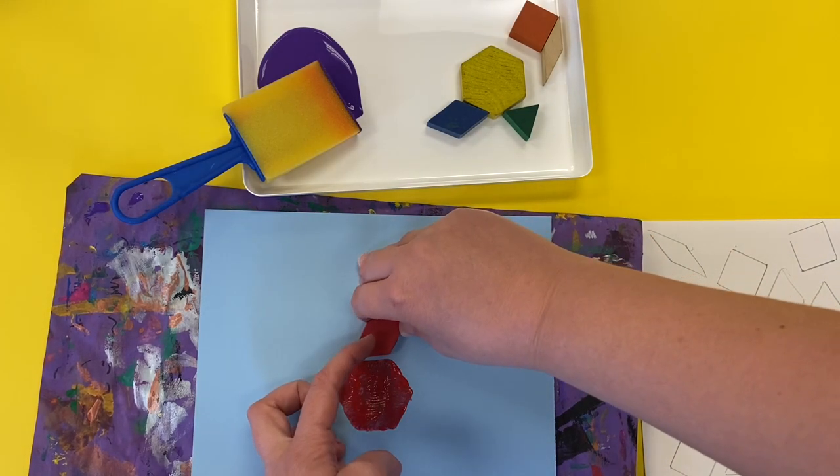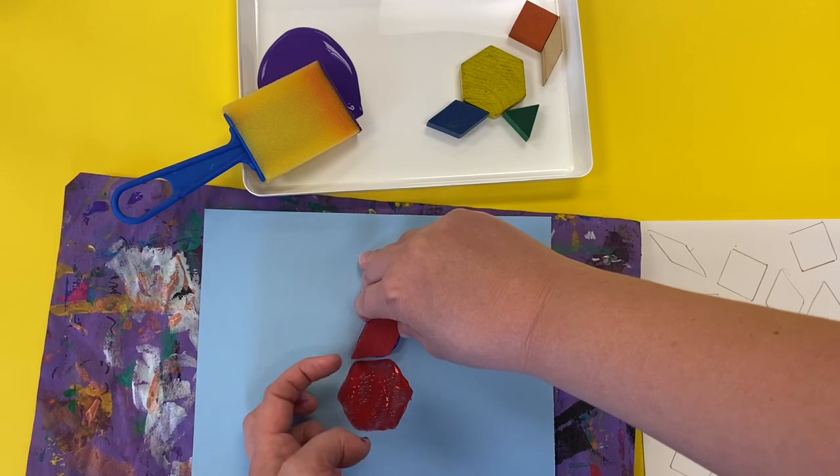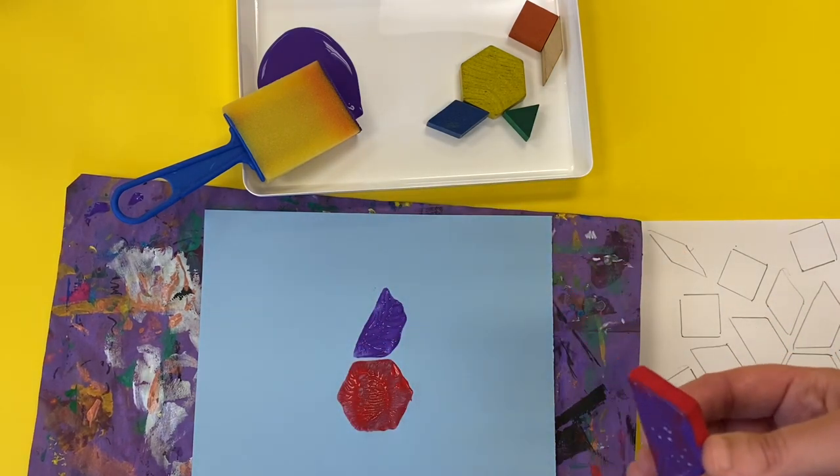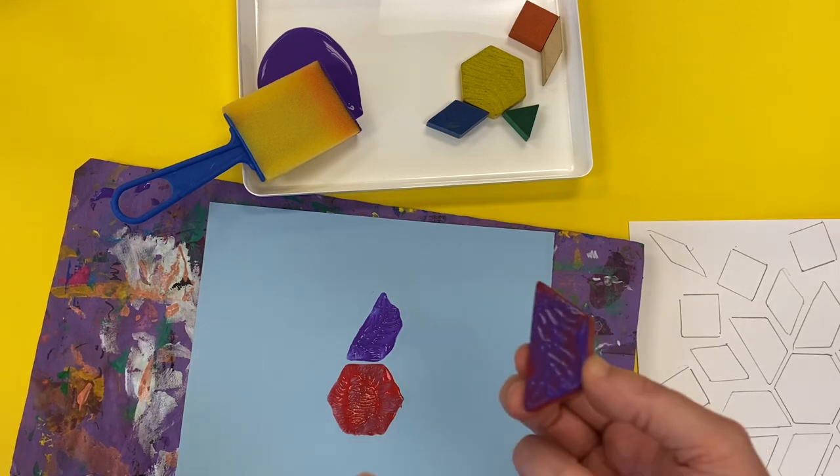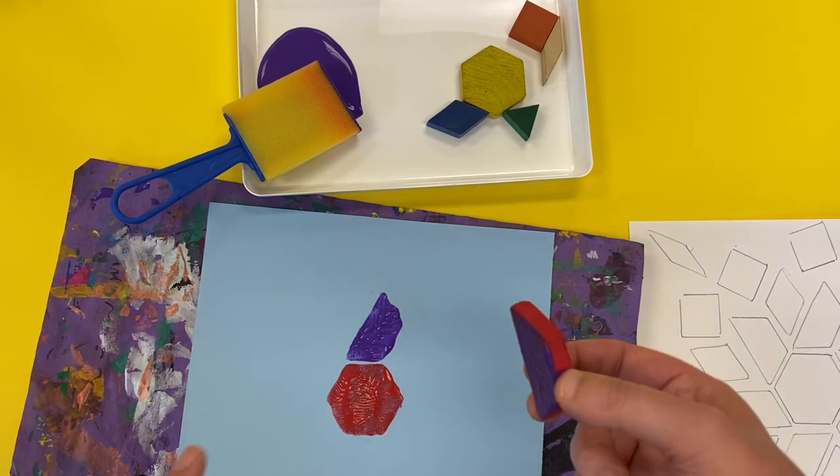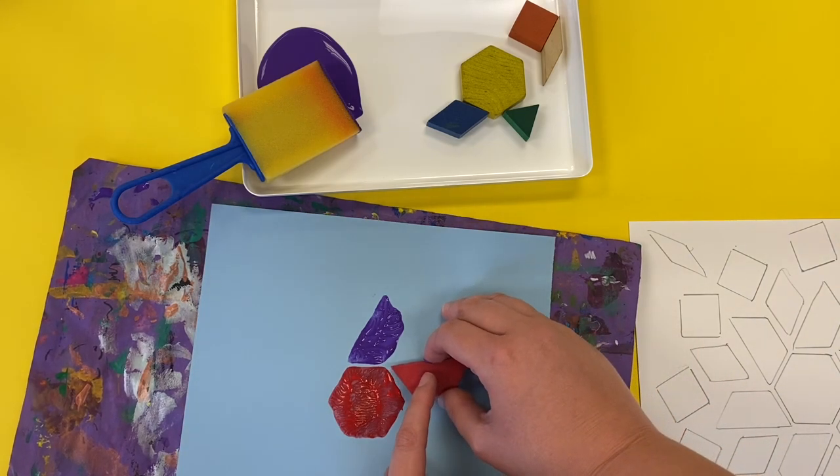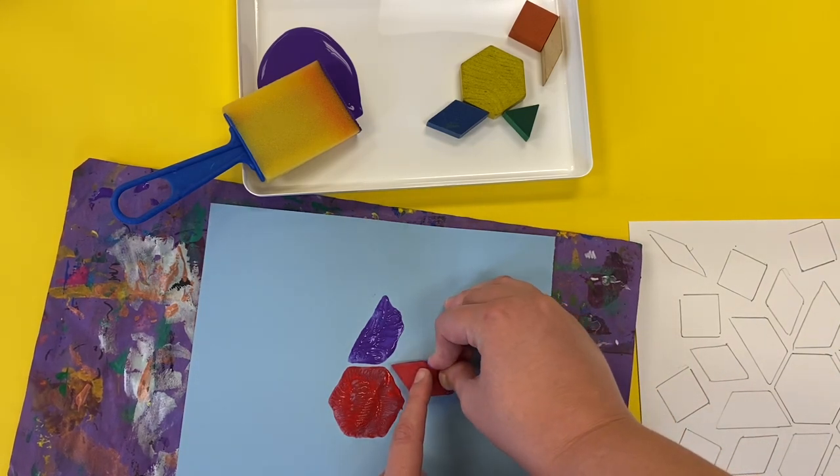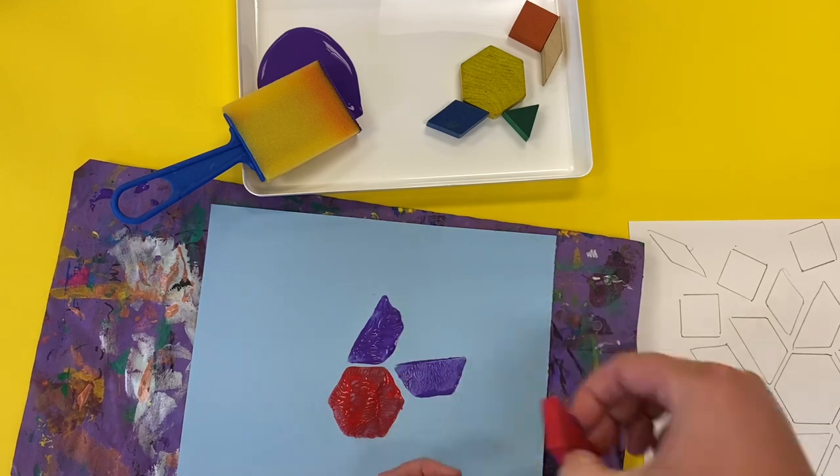I'm just going to line it up and stamp it like that. So you get to decide if you want to get more paint onto your shape for the next stamp. Sometimes there will be enough paint on there that you can stamp it a second time without painting it again.